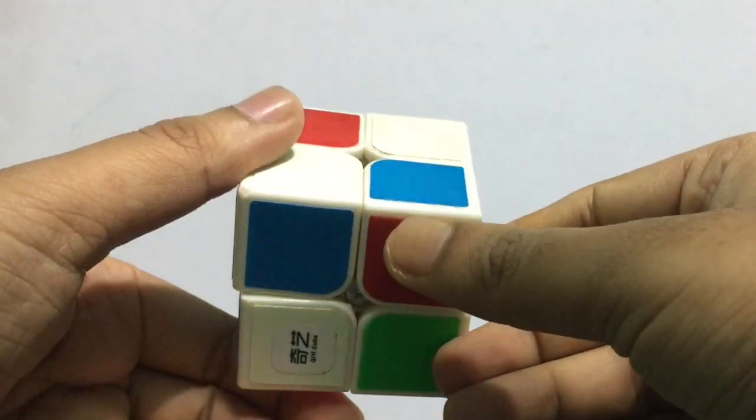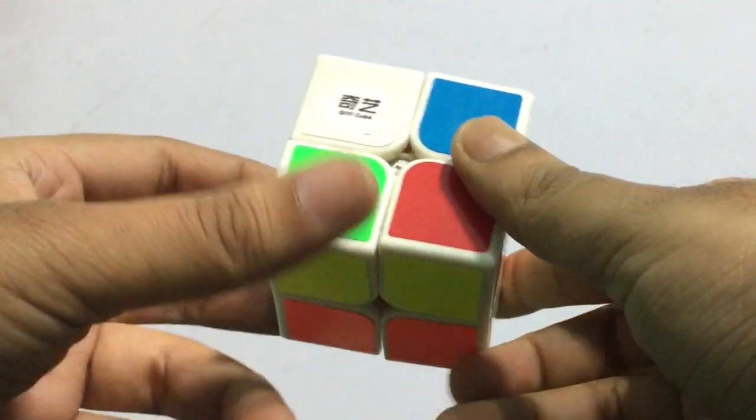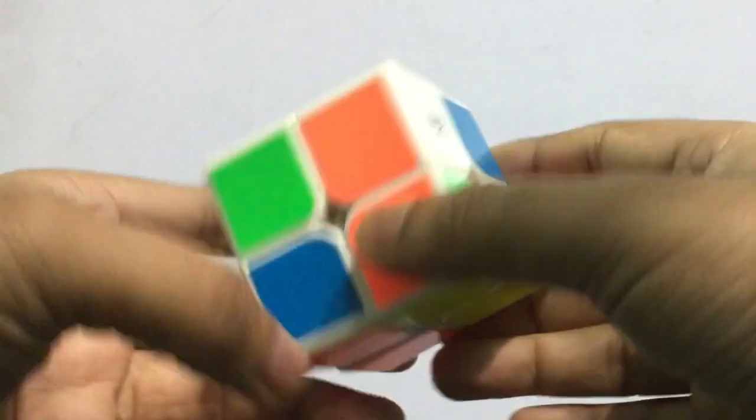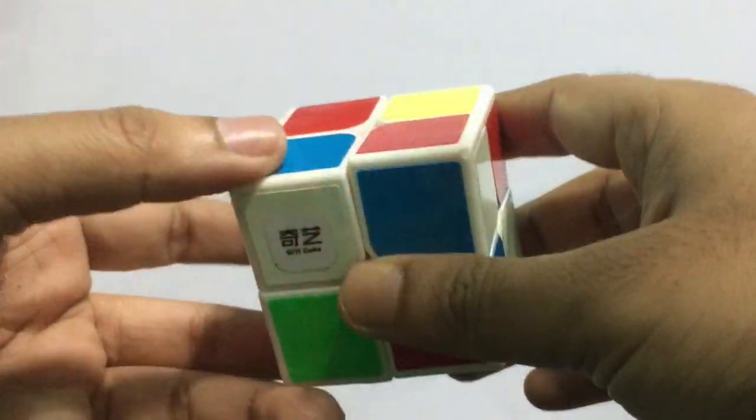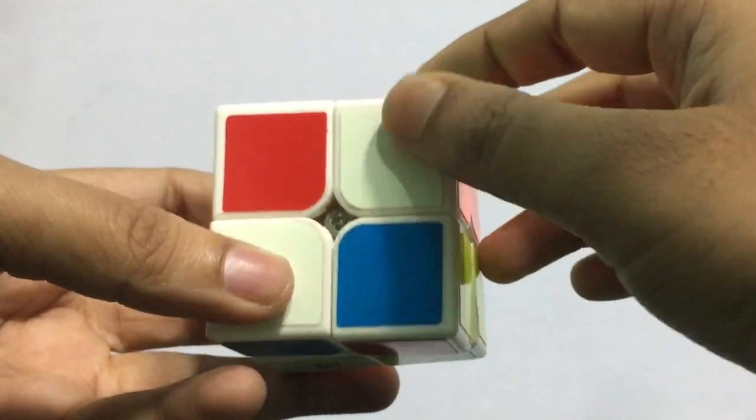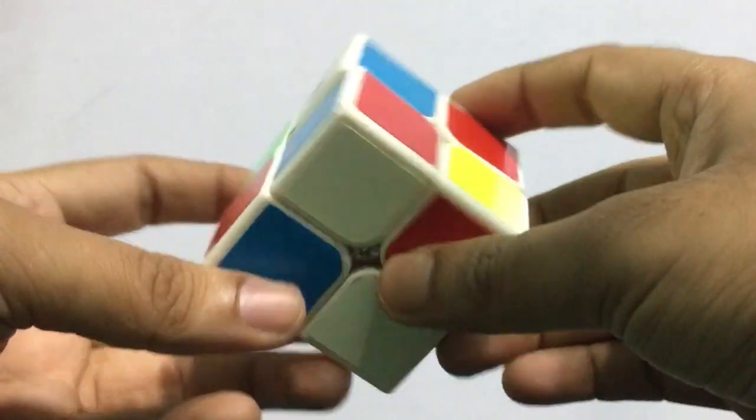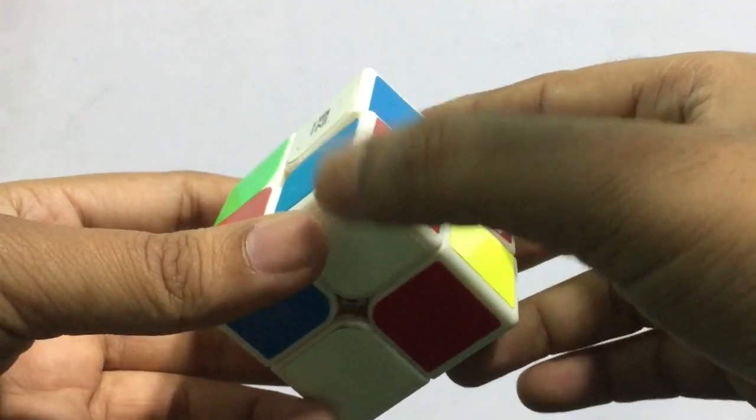The first thing, generally you can start with any color but I'm going to solve it with white. There are four white pieces. You can take any of these whites. Suppose I'm taking this white.